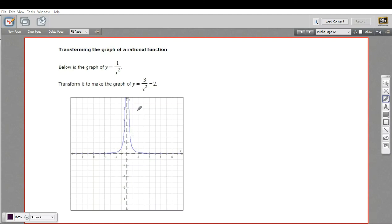In this problem, we are being asked to transform the graph of a rational function. We've got the graph of this rational function, 1 over x squared. That's what that looks like. It's got that vertical asymptote at x equals 0 and the horizontal asymptote along the x-axis there at y equals 0.